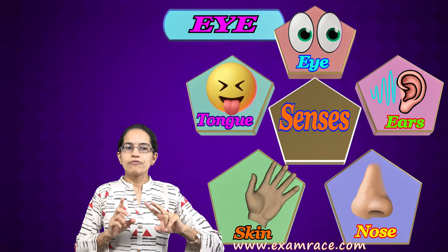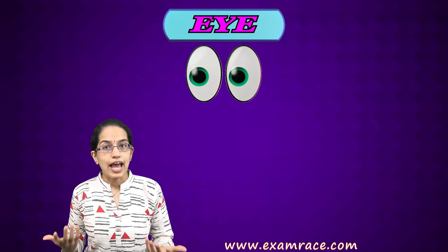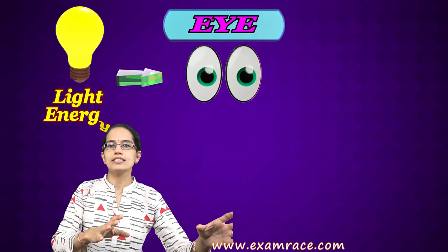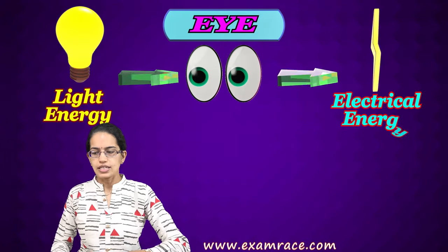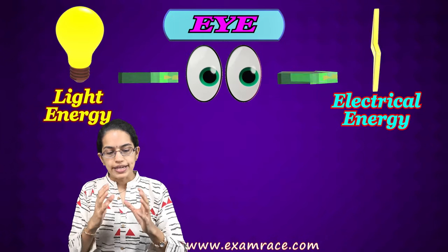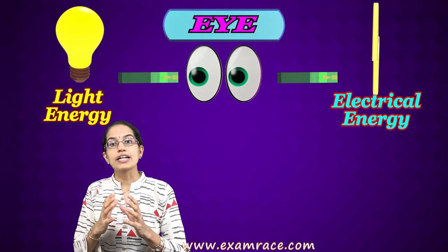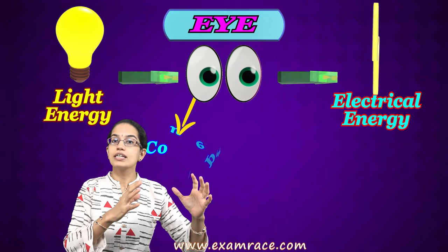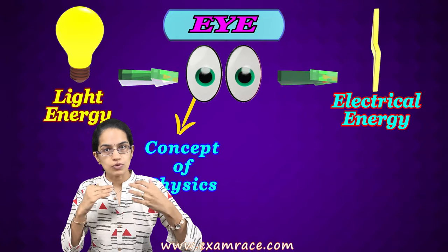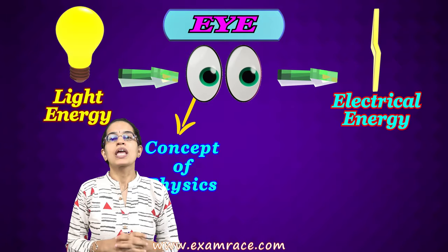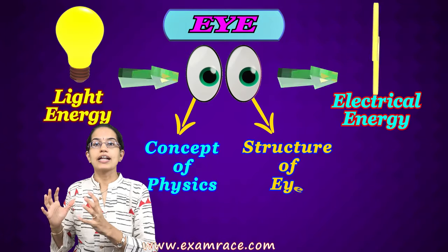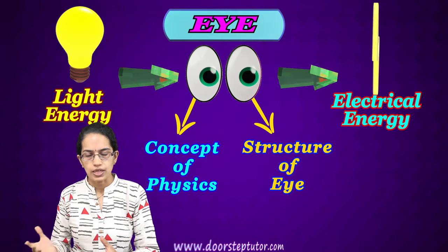If we talk about the eye, what it actually does is it converts light energy into electrical energy. The whole process can be divided into two sections: one is the concept of physics where we understand light and its properties, and the second is the structure of the eye and how it is similar to a pinhole camera.